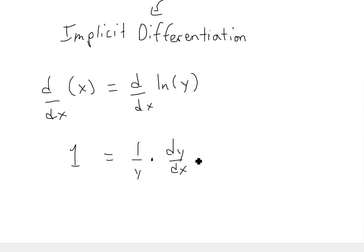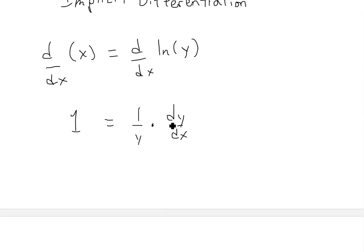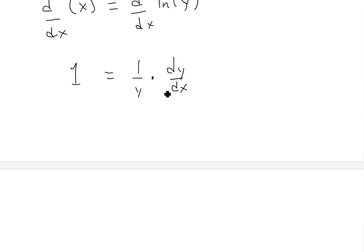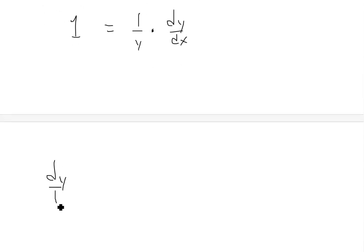So now we could rearrange this. When we rearrange this, we get dy over dx equals to - we'll just take the y, just multiply everything by y, or move the y to the left side. This equals y. So dy over dx, or the derivative of y, is just equal to y.